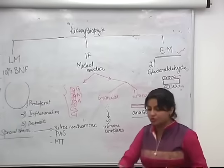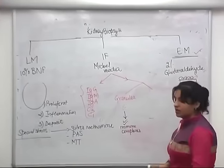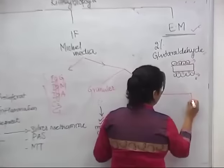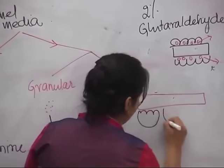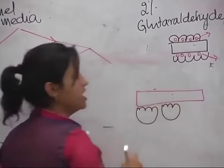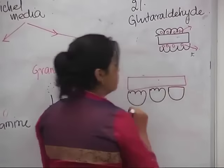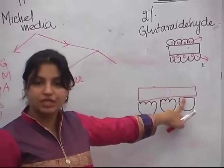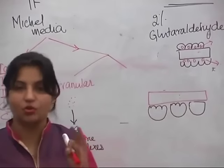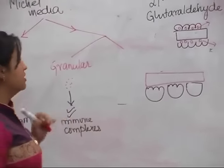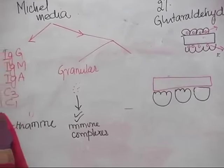Another important point that electron microscopy helps us pick up is the status of foot processes. The epithelial cells are present over the basement membrane with the help of foot processes. Loss of these foot processes is also seen on electron microscopy only.